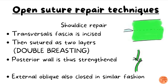The Shouldice repair is a modification of Bassini repair. The initial steps are similar, but the transversalis fascia is incised and then sutured in two layers — the double-breasting technique — producing a stronger posterior abdominal wall. The same double-breasting technique is also applied to the external oblique muscle. Shouldice repair is associated with fewer chances of hernia recurrence after surgery compared to Bassini repair.